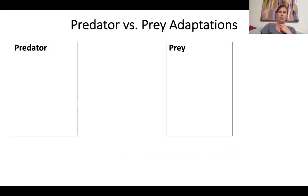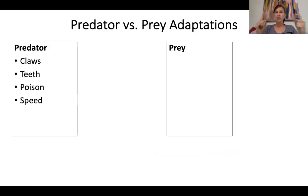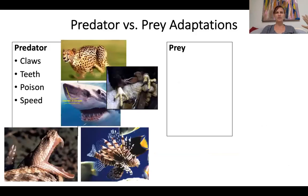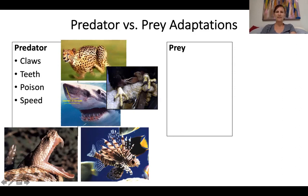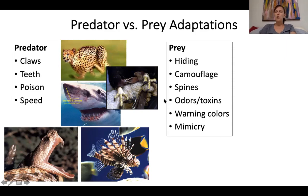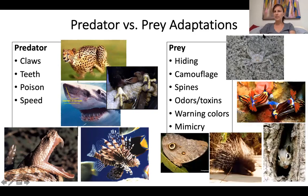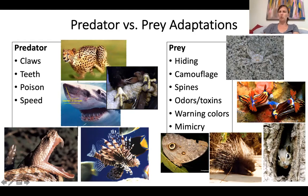Let's talk about predator-prey adaptations. Predators have claws, teeth, poison, and speed — think cheetahs with big claws and keen senses, sharks with giant teeth, talons. Prey have different kinds of adaptations such as the ability to hide well, camouflage, spines, odors or toxins, warning colors, and mimicry. Here for example a little crab is very well camouflaged, bright warning colors signal 'don't eat me,' spines provide defense, and some animals look like they have a giant eyeball to appear bigger and stay predators away.